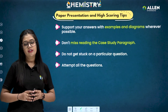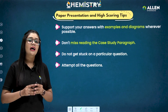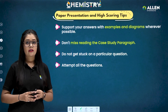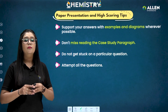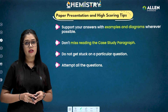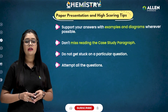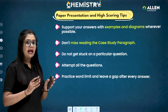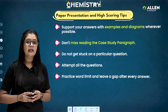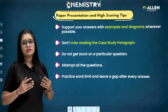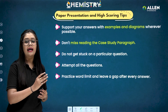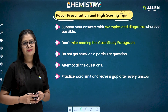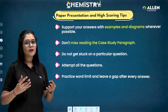Attempt all questions — don't leave any unattempted, because if a question has an error from CBSE, they provide bonus marks for that question. If you haven't attempted it, you won't get the bonus marks. Also practice word limit and leave a gap after every answer — aim for seven to nine words per line with proper spacing, and leave a three-line gap after every answer. This makes your paper more appealing to the examiner.